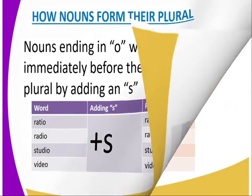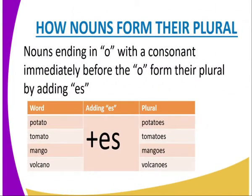Nouns also form their plural with endings in -O where the consonant immediately before the O causes the plural to be formed by adding -ES. For example, in the word 'potato' the O is preceded by the consonant T, so we get 'potatoes'. Similarly, tomato to tomatoes, mango to mangoes, volcano to volcanoes.